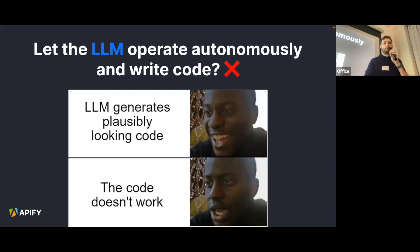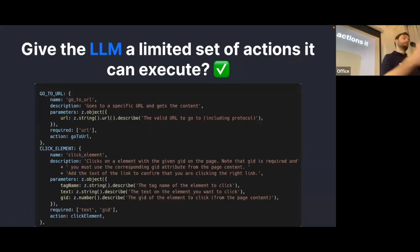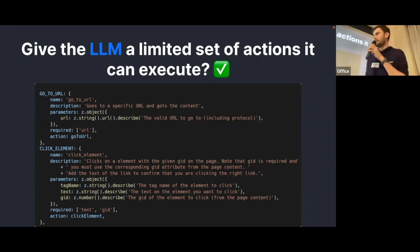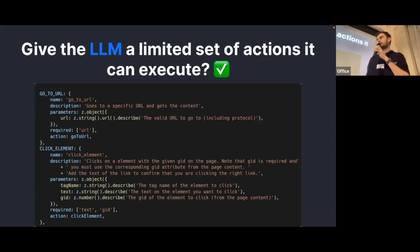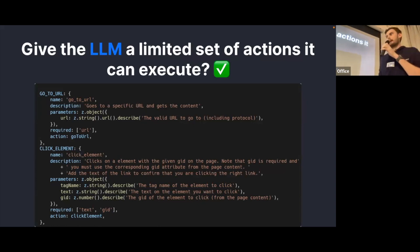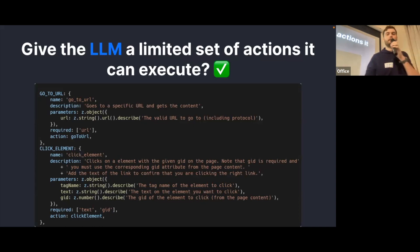So we scratched that idea and went with the second approach: give the LLM a limited set of actions it can execute. In the screenshot there are two example actions. One is 'go to URL' — you only need to provide the parameters and it will navigate to a specific web page. The other is 'click element', which clicks an anchor tag on a web page. This is the interface the LLM uses to trigger actions.